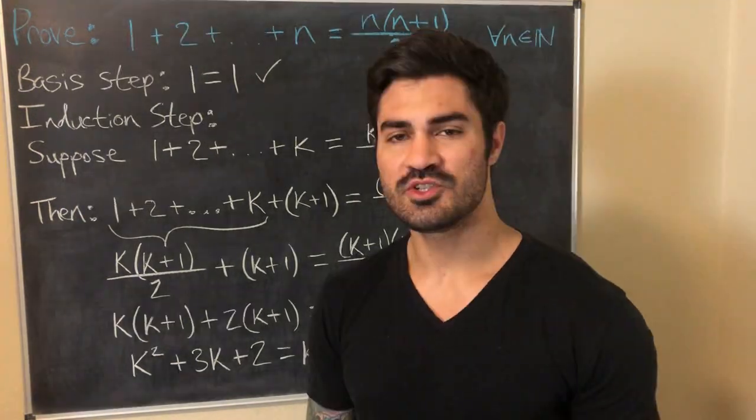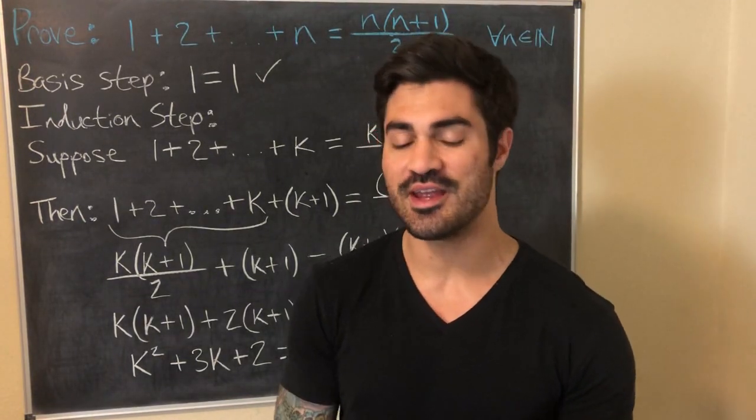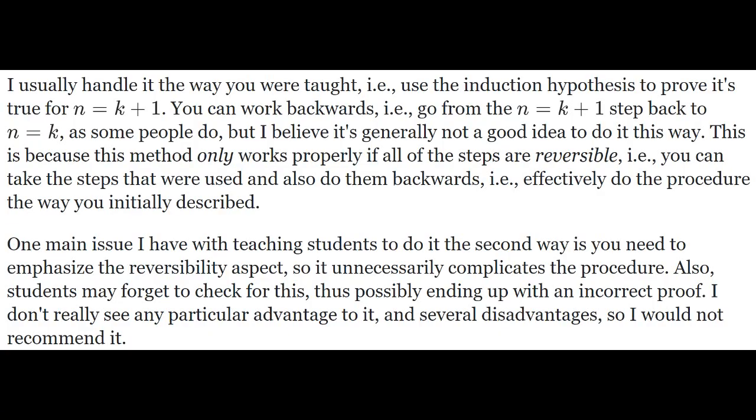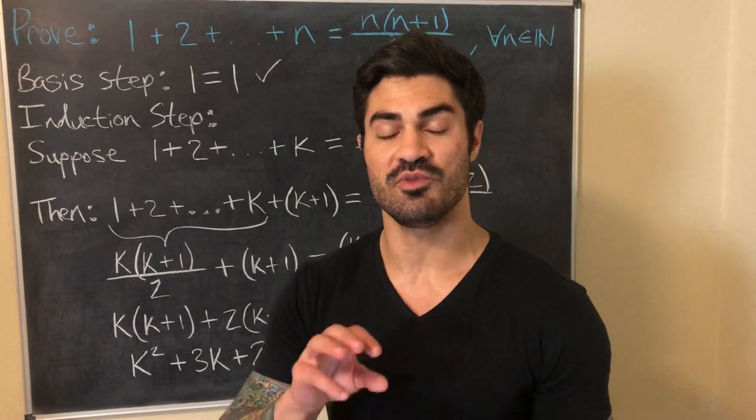Two people responded and both provided good insight. The first person said they usually handle it the way I was taught. They noted you can work backwards — going from n equals k plus 1 back to n equals k — but it's generally not a good idea. This method only works properly if all the steps are reversible. One main issue with teaching students this way is you need to emphasize reversibility, which unnecessarily complicates the procedure. Students may also forget to check for this, possibly ending up with an incorrect proof.